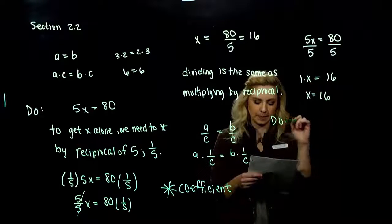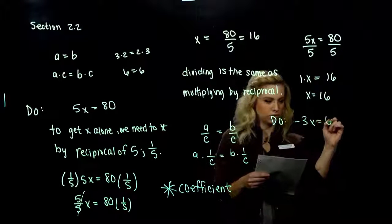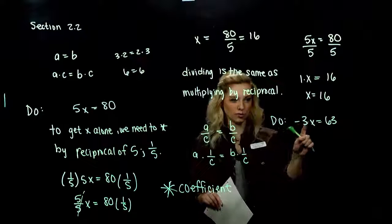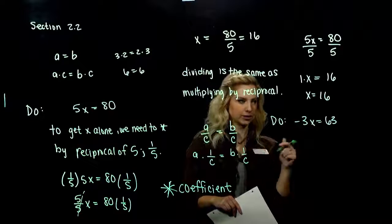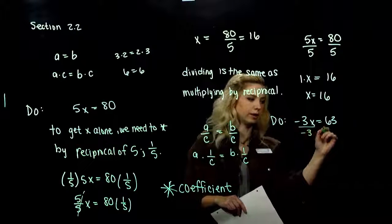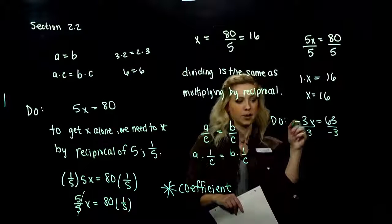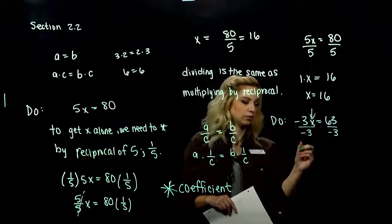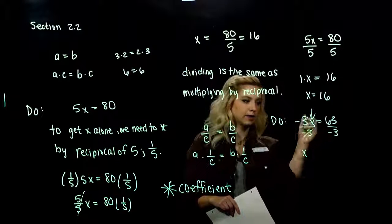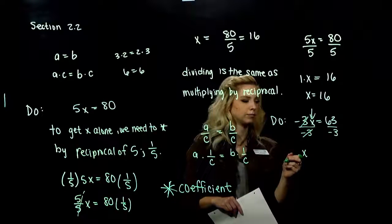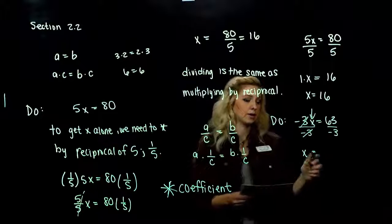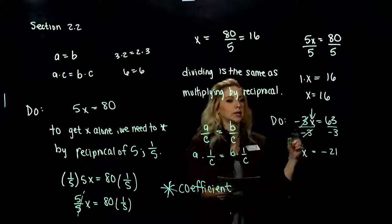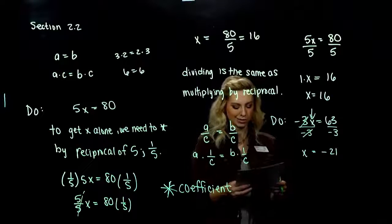Some more practice: negative 3x is equal to 63. The coefficient is attached to x with multiplication, so we want to divide both sides by negative 3 — we also want to move the negative; we want x on its own. Same thing divided by the same thing, it's going to be gone. What is 63 divided by negative 3? We get negative 21. And we can always plug it back in and check to make sure it's actually true.